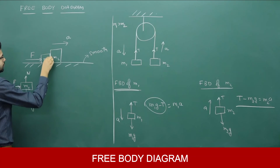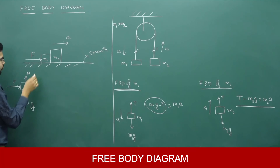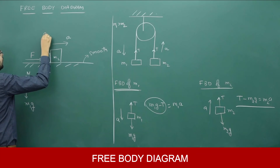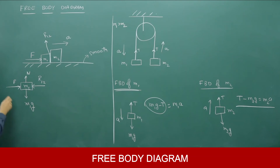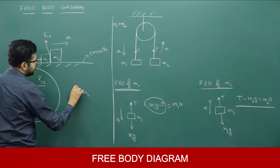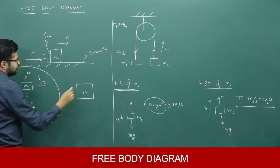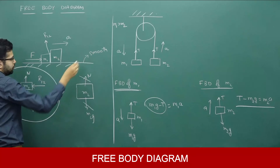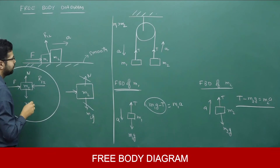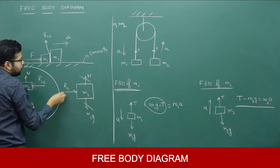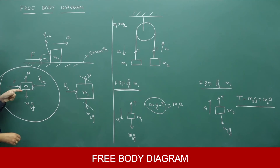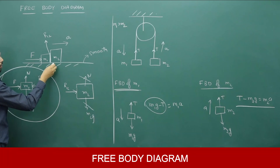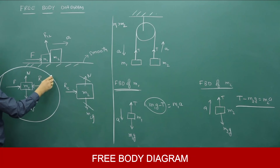Now something is opposing the motion of m1 — there is a reaction force between the two surfaces, which we call R12. This reaction force acts opposite to F on m1. For the free body diagram of m2: normal reaction and m2g cancel vertically. The only horizontal force acting on m2 is R12, which acts in the forward direction, pushing m2 to the right. Importantly, the reaction force on m1 opposes its motion, while the same reaction force on m2 drives it forward — so the directions are opposite in the two diagrams.